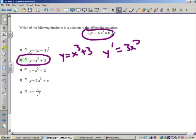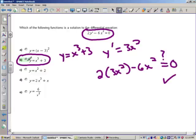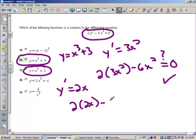Let's see if that is a solution to this. 2y prime minus 6x squared, does it equal zero? Well, 2y prime would be 2 times 3x squared minus 6x squared. Does this equal zero? And the answer, of course, is yes. Now, why wasn't it c? What was wrong with c? Well, y prime for c would have been 2x. And 2 times y prime minus 6x squared does not equal zero.